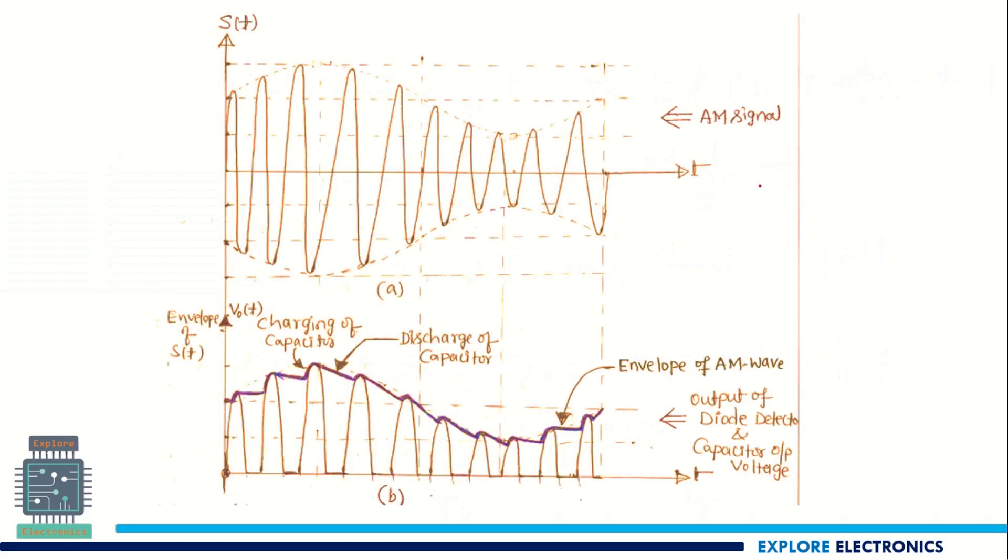And you can see here clearly this is the AM signal what we have at the input to the envelope detector. And you can see here how the capacitor is charging and discharging. This capacitor charges and again discharges until it gets the next value more than that capacitor value. So this process continues and we are able to get this envelope of the AM wave out of the carrier.